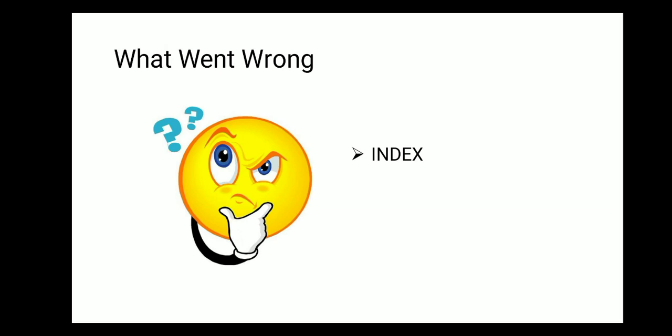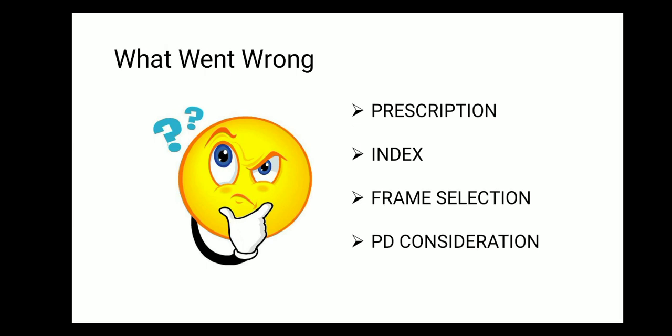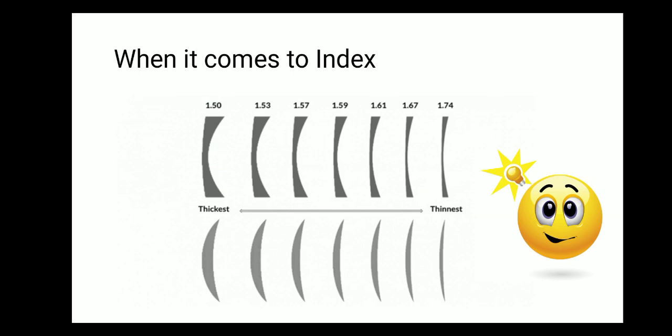Just as a quick reminder, in the thickness series we are going to cover four topics, and in this video we are going to learn about refractive index. All of us know that higher the index, lesser the thickness — this is a universal fact in the optical industry. The index values range from 1.50, 1.53, 1.57, 1.59, 1.61 right up to 1.74. The top profile shown is on a minus lens and the bottom profile is on a plus lens. Lower index means higher thickness; higher index means lower thickness.